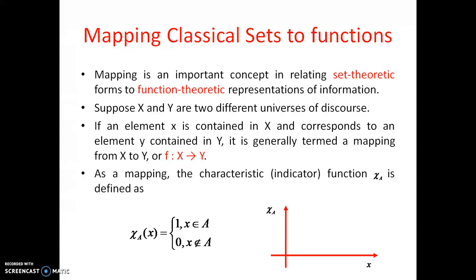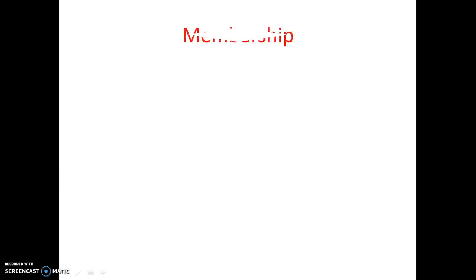χ_A(x) is placed on the y-axis and x is on the x-axis. The full membership value is one. Before the first vertical line all the values are zero, and after the second vertical line all the values are zero. So in between the two vertical lines the value is one — that means this is capital A. If x belongs to capital A, the value is full membership, which is one; otherwise it is zero.